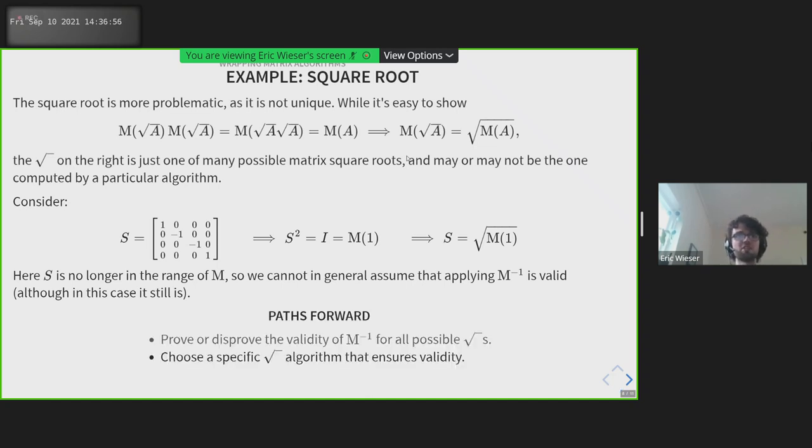From here, we can go in two directions. We can either try and prove or disprove whether this approach works in general, either by coming up with a counterexample or coming up with a proof, or we can just look at one specific square root algorithm and show that that one is valid. We'll go with the second option. But if we're going to look at one specific algorithm, we may as well adapt that algorithm to work with multivectors.